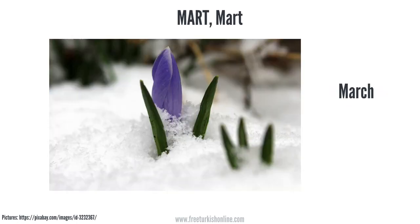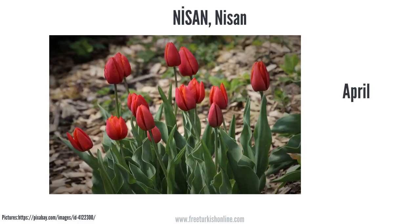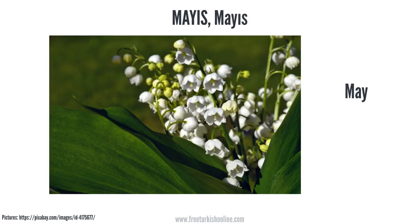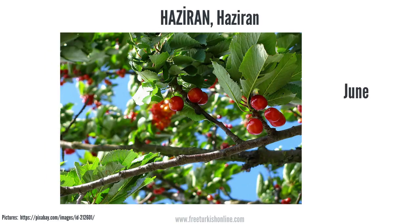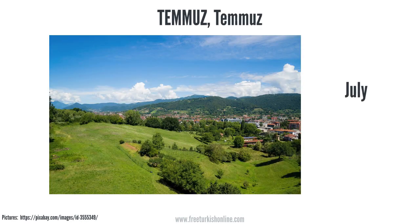March means Mart in Turkish. Mart. Please repeat after me: Mart. April means Nisan in Turkish. Nisan. Please repeat after me: Nisan. May means Mayıs in Turkish. Mayıs. Please repeat after me: Mayıs. June means Haziran in Turkish. Haziran. Please repeat after me: Haziran.